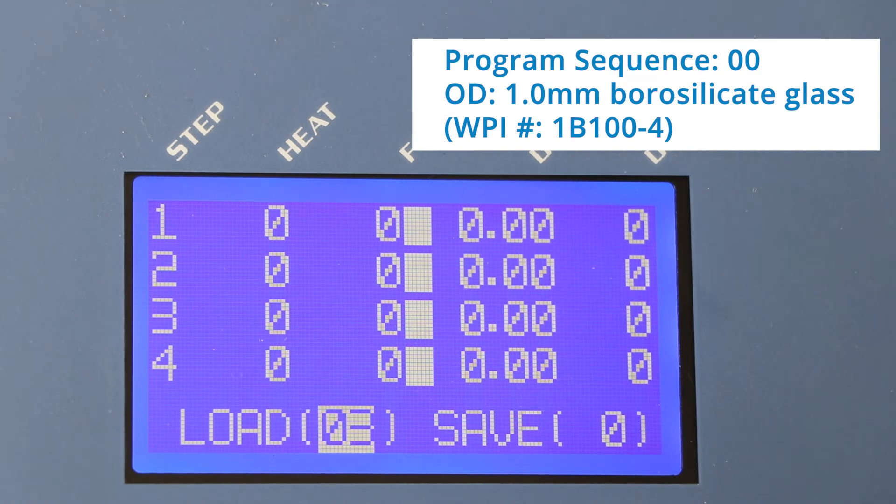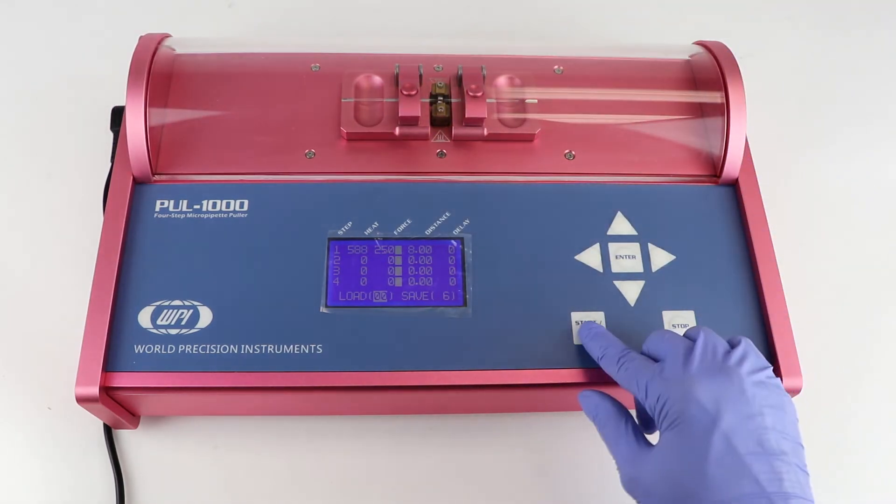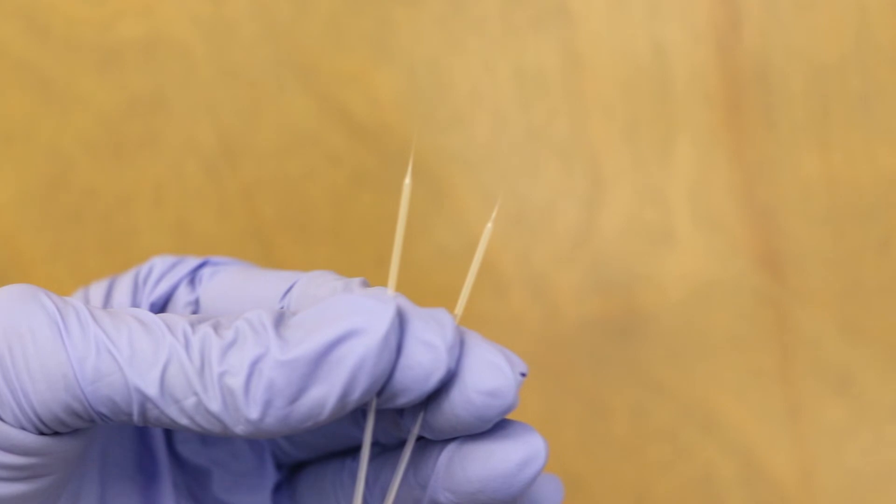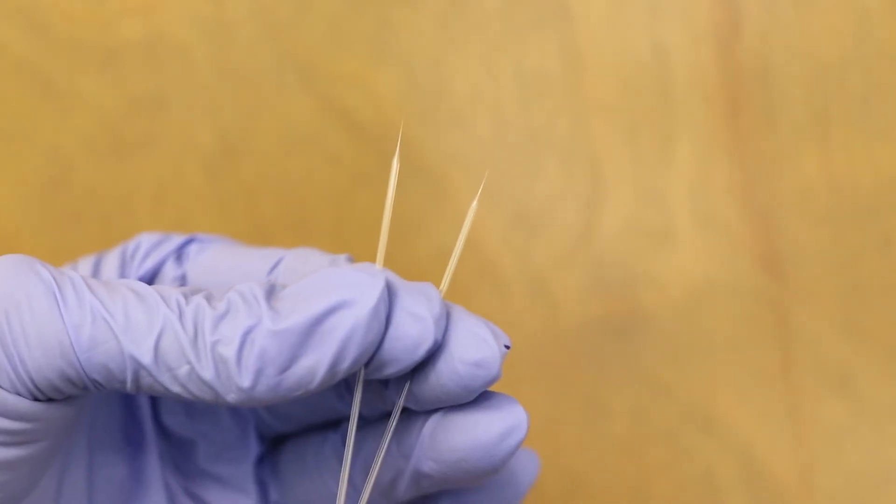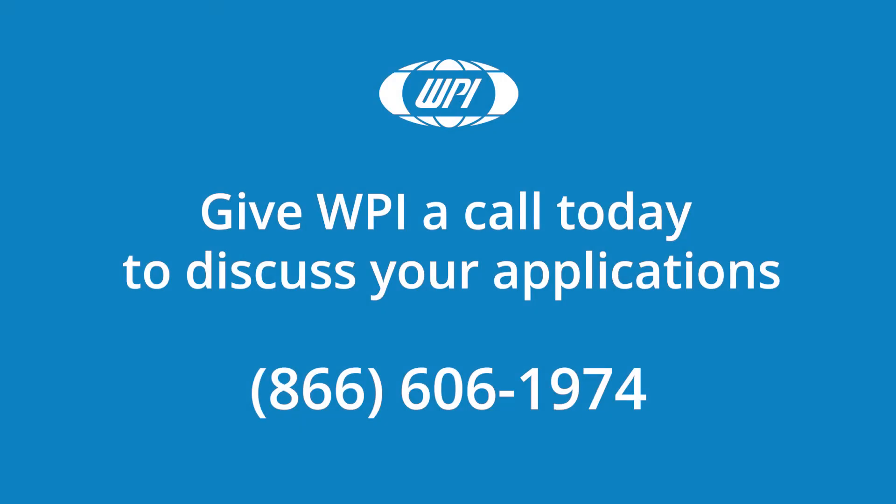Close the cover, press start, and the puller will do the rest. Each pull results in two identical micropipettes. Refer to the POOL 1000 cookbook for details about the factory-installed programs, and if you have any questions, just give us a call.